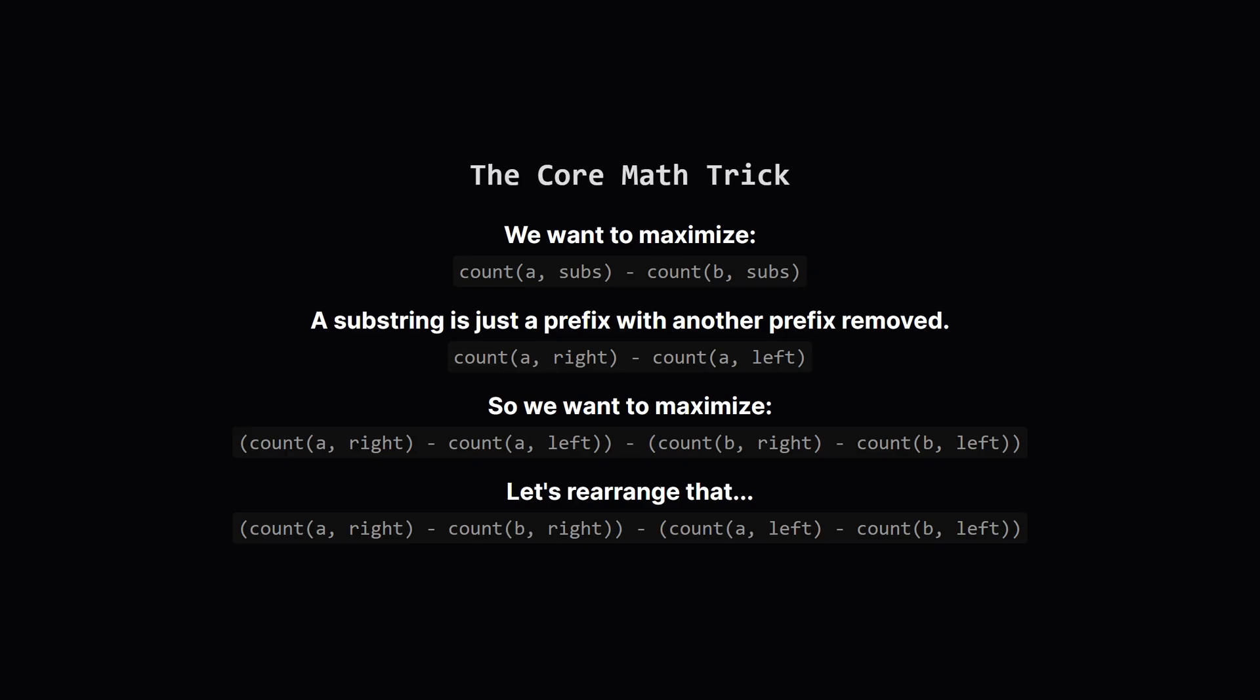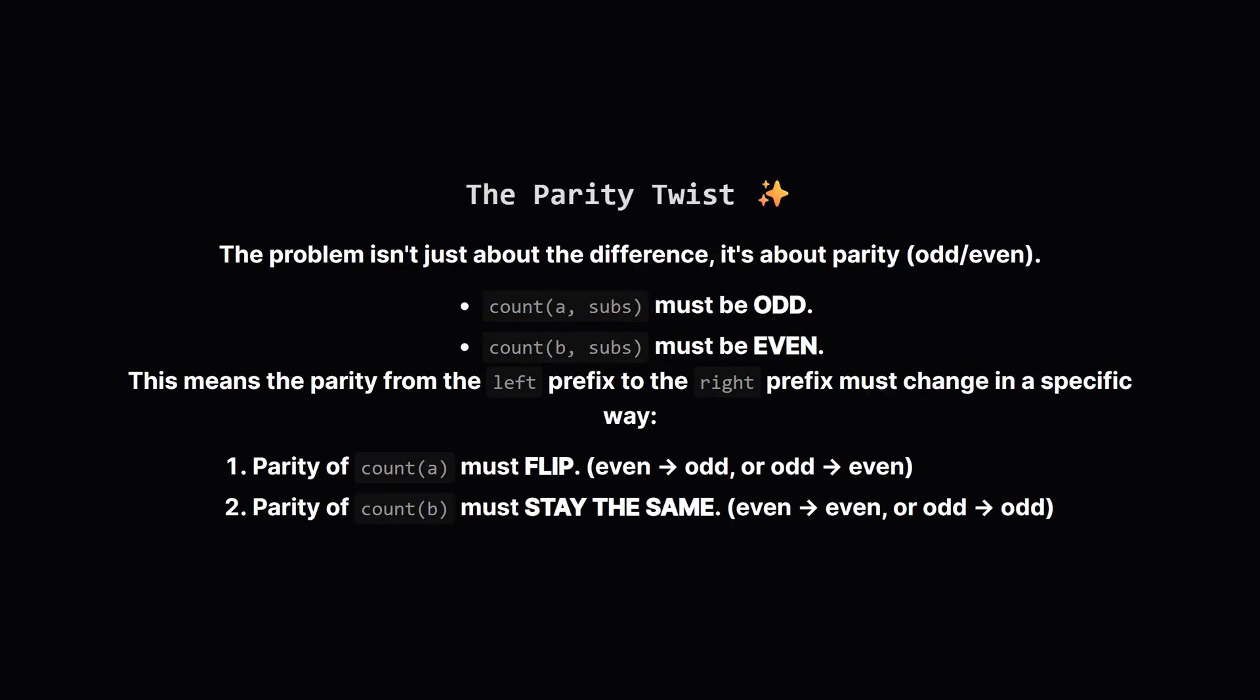Now, for our fixed A and B, let's think about how to calculate the score. A substring is just a long prefix of the string, with a smaller prefix cut off from the beginning. So, the count of A in a substring is just the count of A up to the right endpoint, minus the count of A up to the left endpoint. If we write out the full formula for our score and then do a little bit of algebra, we can rearrange it. It becomes the A minus B count for the right prefix, minus the A minus B count for the left prefix. This is a huge clue. It means we can think about the problem in terms of prefix values, but we can't forget the odd and even rules.